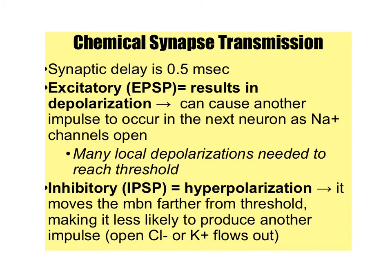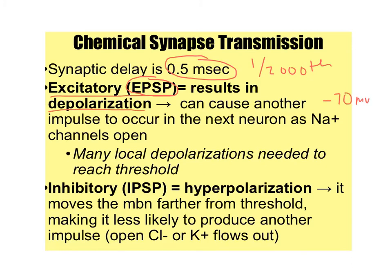Continuing with chemical synapse transmission: the delay is 0.5 milliseconds, which is 1/2000th of a second — so sure, there's a delay, but it's pretty fast. There are two types of postsynaptic responses. The excitatory postsynaptic potential results in depolarization of the neuron — it starts at its resting potential of negative 70 millivolts and becomes less negative, closer to the threshold of negative 55 millivolts, therefore closer to starting an action potential.